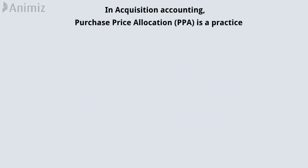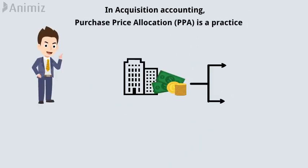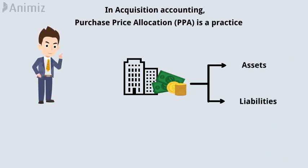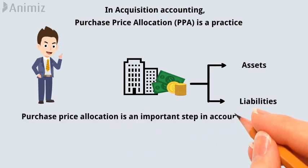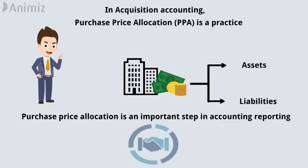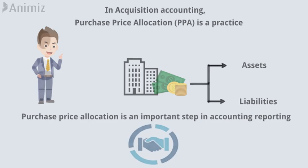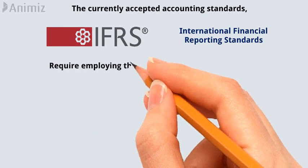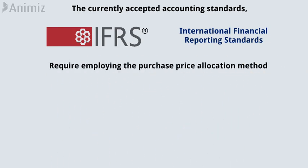In acquisition accounting, purchase price allocation or PPA is a practice in which an acquirer allocates the purchase price into the assets and liabilities of the target company acquired in the transaction. Purchase price allocation is an important step in accounting reporting after the completion of a merger or acquisition deal. The currently accepted accounting standards such as the International Financial Reporting Standards or IFRS require employing the purchase price allocation method for any type of business combination deal.